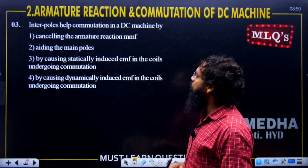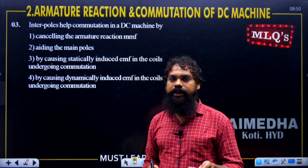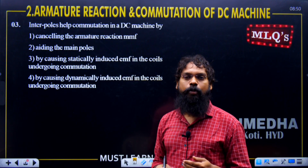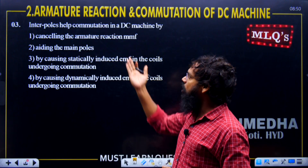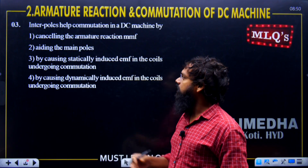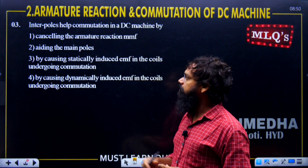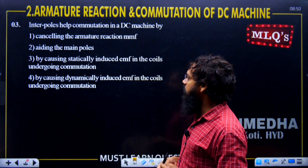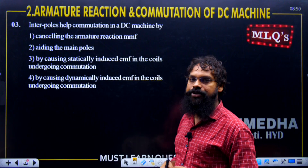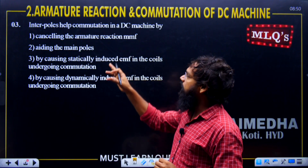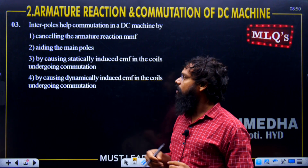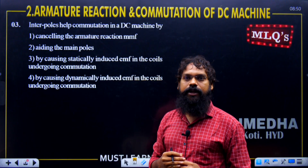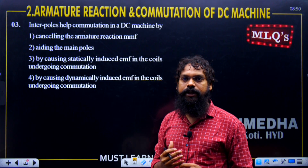Interpoles help commutation in DC machines. The function of interpoles is: to help and improve commutation; to cancel the armature reaction MMF; to aid the main poles; or to cause the statically or dynamically induced MMF in the coils undergoing commutation. What we do is neutralize the cross-magnetization effect.